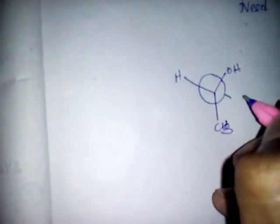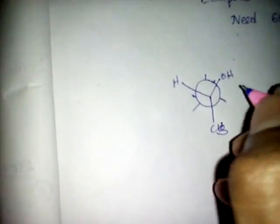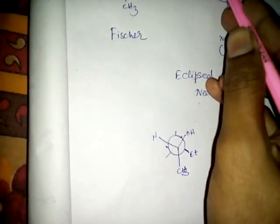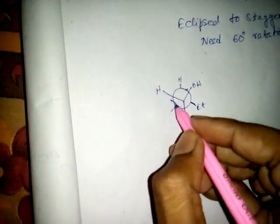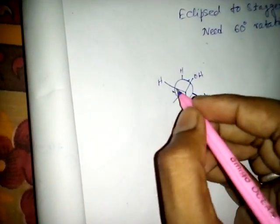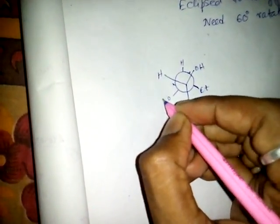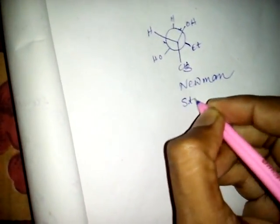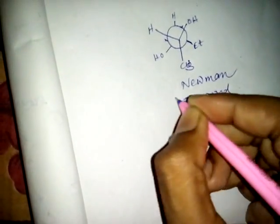We keep the front carbon constant and rotate the back carbon. The substituent goes here and here. H goes here, H goes here, and OH goes here from here. This is the Newman staggered form.